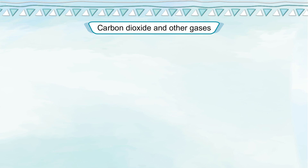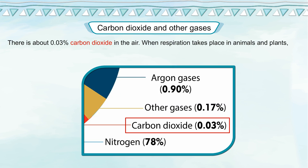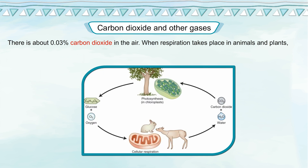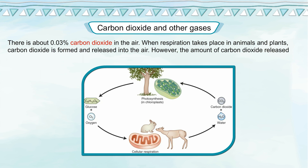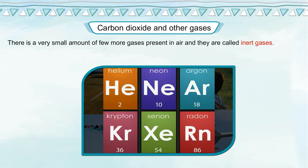There is about 0.3% carbon dioxide in the air. When respiration takes place in animals and plants, carbon dioxide is formed and released into the air. However, the amount of carbon dioxide released by plants is much less than the amount of oxygen released. There is also a very small amount of a few more gases present in air.